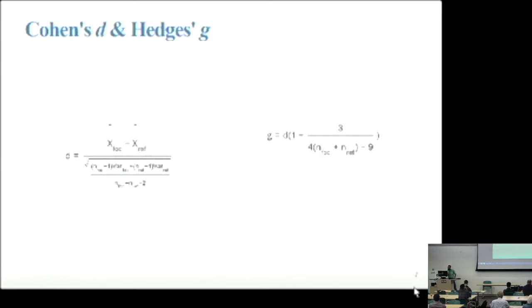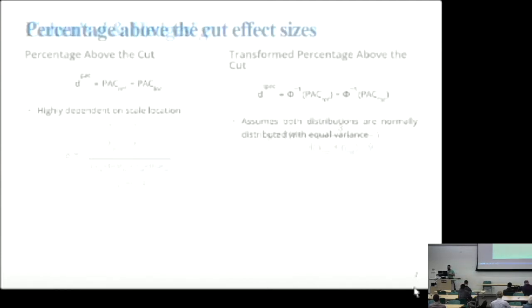So my equations are not showing up for some reason. You can kind of imagine what this might actually look like. On the left, you have Cohen's D equation. What I'm really trying to emphasize here is that the numerator is the difference between the means on those two groups, and that's divided by the pooled standard deviation between the two groups. Hedge's G is just a transformation of Cohen's D for that small population sample size correction.